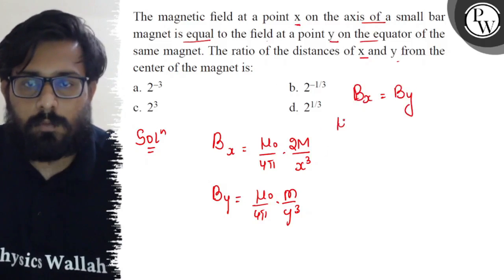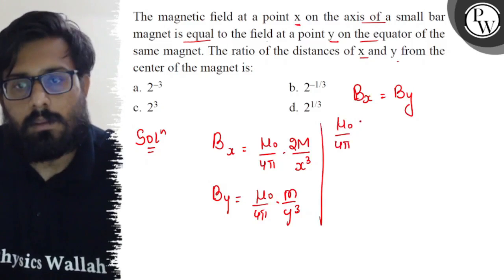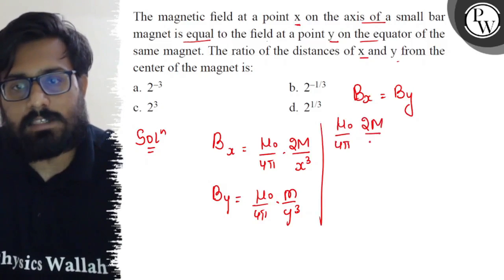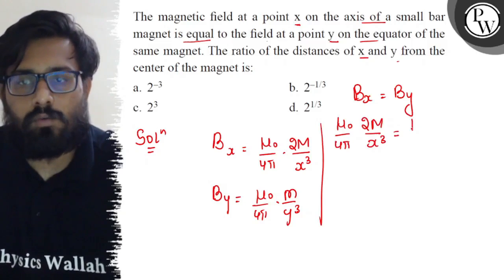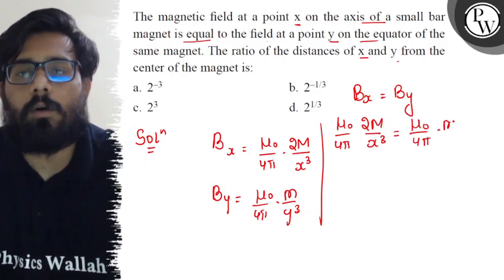So μ₀/4π × 2m/x³ which can be equal to μ₀/4π × m/y³.